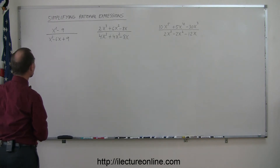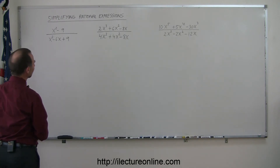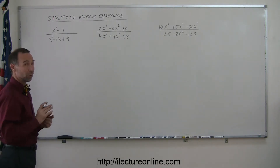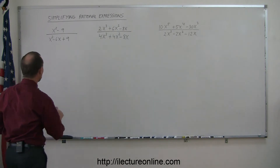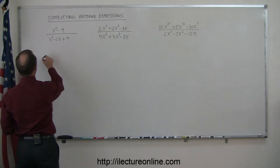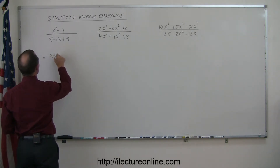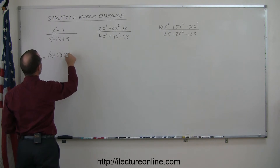Looking at our first example, we look at the numerator, and that looks like the difference of squares, so I know how to factor that. I can write that as (x + 3) times (x − 3).